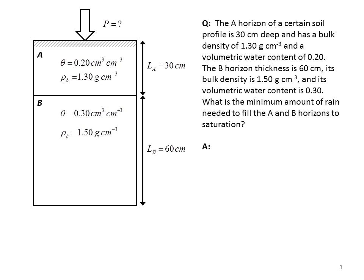In this problem, we have a soil profile with two horizons. You can see up here in the question statement, the A horizon of a certain soil is 30 centimeters deep. It's shown here. And it has a bulk density of 1.3 grams per cubic centimeter. It's indicated here by the Greek letter rho, subscript B. That's the bulk density. It has a volumetric water content of 20%, shown here.